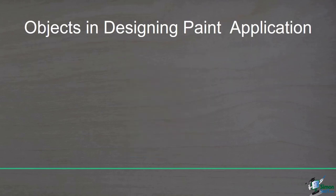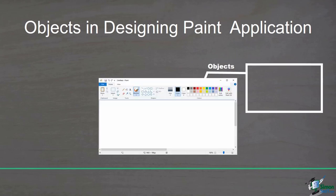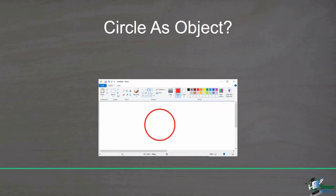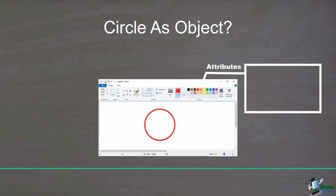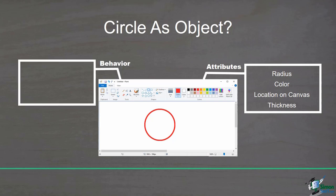In this application, shapes including circles, rectangles, polygons, and triangles can be considered as objects. Each of them has attributes and behaviors. For example, consider a circle as an object. What attributes and methods can you think of for a circle? A circle has a radius, color, location on canvas, and thickness. And also it can have some methods or behavior — for example, you can move a circle right, left, up, or down, change its color, delete it from the canvas, and so on. These are behaviors or methods for a circle.